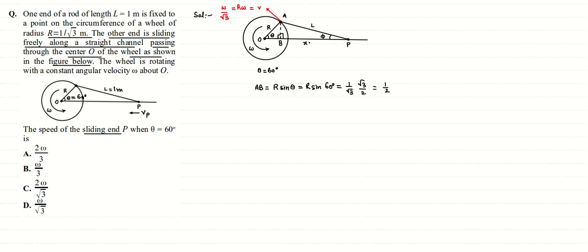In triangle ABP, sinφ = AB/AP = (1/2)/L = (1/2)/1 = 1/2, which implies φ = 30°. So this angle is 30° and θ = 60° is given.